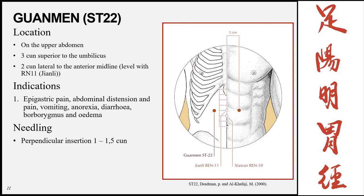Guanmen, Stomach 22, is on the upper abdomen, 3 cun superior to the umbilicus and 2 cun lateral to the midline. Find the 2 cun lateral line and the 3 cun superior mark — where they meet is Stomach 22.